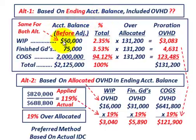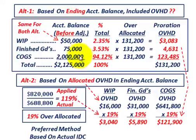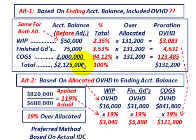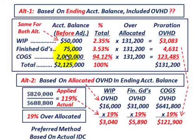For alternative one, based on our ending account balances, we sum up whatever our ending balances are in each of these accounts. The total amount is $2,125,000. For work in process, we have $50,000 divided by $2,125,000, which represents 2.35%. Finished goods is $75,000 divided by $2,125,000, representing 3.53%. And cost of goods sold is $2,000,000 divided by $2,125,000, representing 94.12%. The total adds up to 100%.